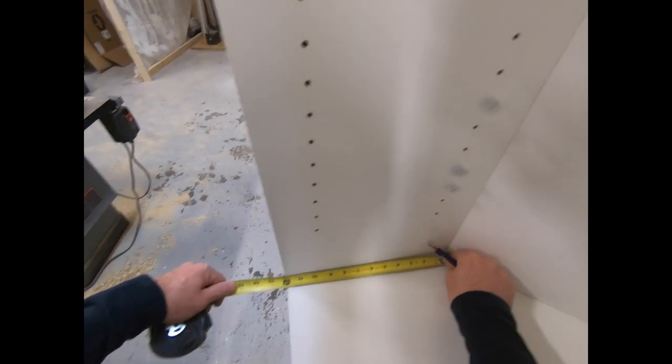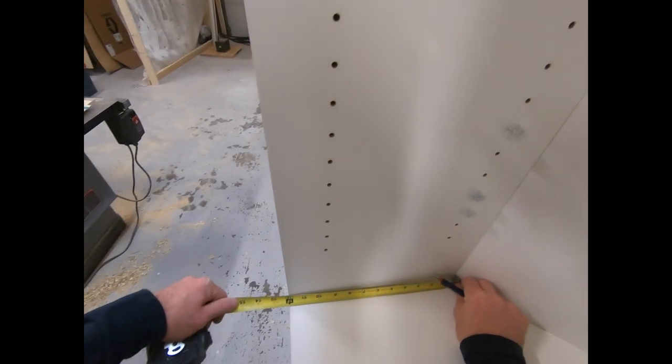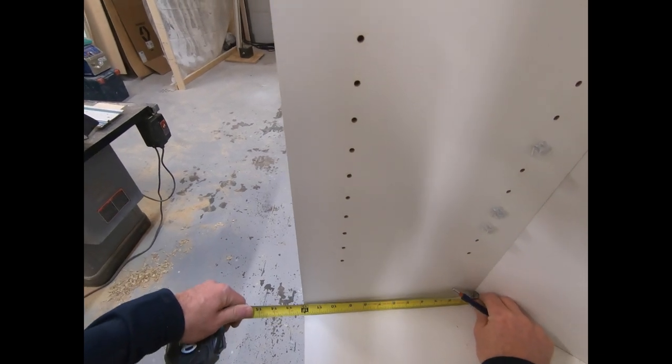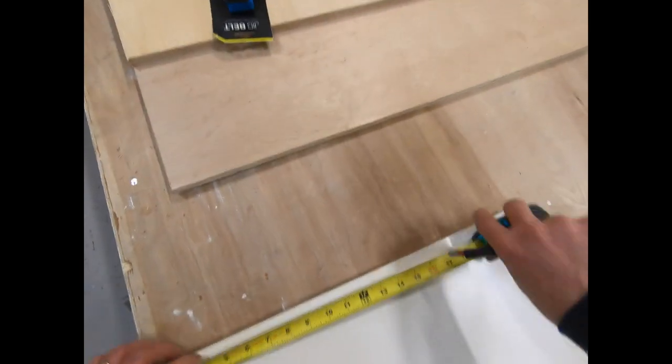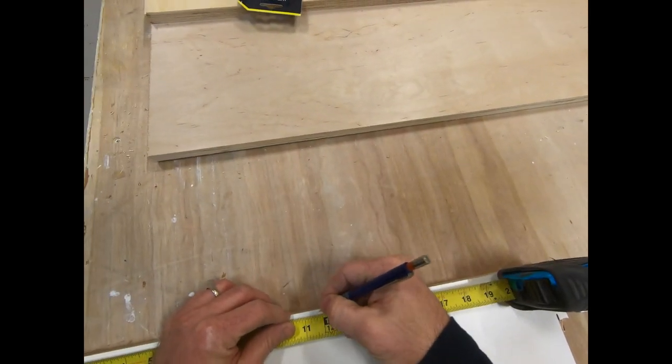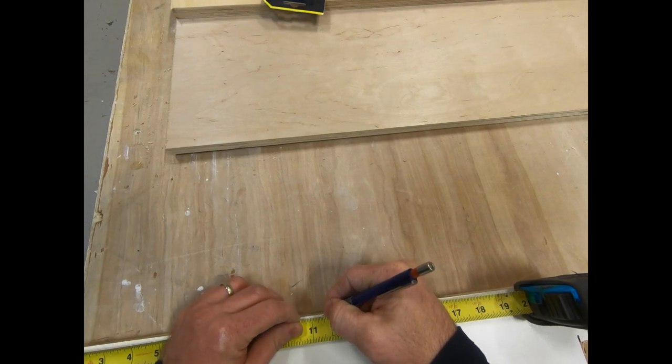But that is, well, that's 12 inches, it looks like, to the point. So we're going to make it a half an inch plus a 16th. So we're going to go 11 and 7 16ths from the front edge. Okay, right on the edge again.